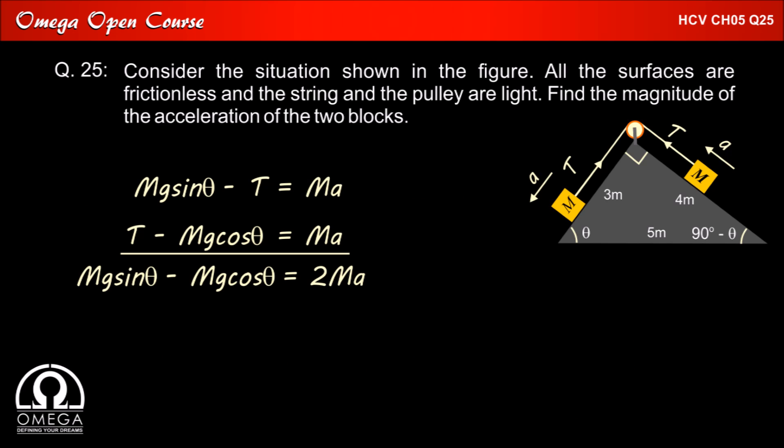Adding equation 1 and 2, we get mg sin theta minus mg cos theta is equal to 2ma, which implies 2a is equal to g(sin θ - cos θ), that is a is equal to (g/2)(sin θ - cos θ).